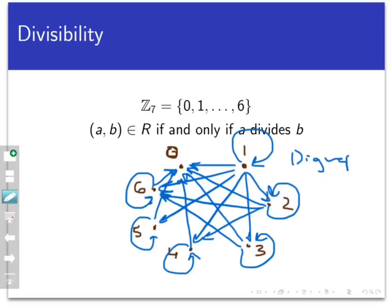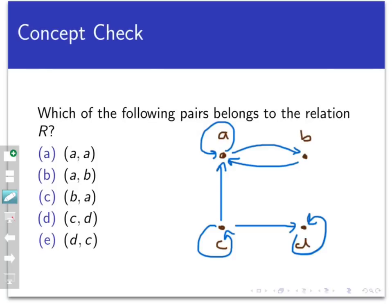So let's see how well you understand this concept with a concept check. Here's the digraph, or directed graph, for a relation R on the set ABCD. Looking at the graph, which of the following ordered pairs belongs to the relation R? Check all that apply, and come back from pausing the video when you're ready.